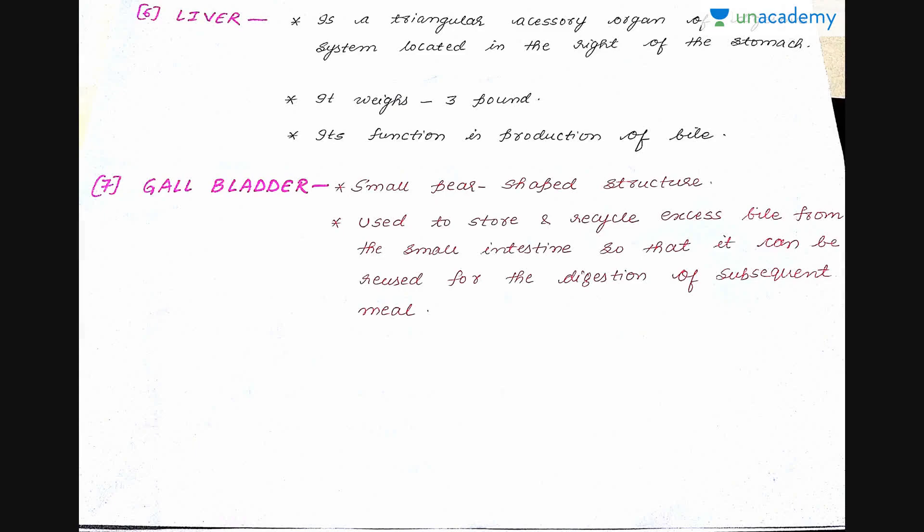Moving forward is the liver. It is an accessory organ, triangular in shape, located to the right of the stomach. It weighs 3 pounds and its function is the production of bile.